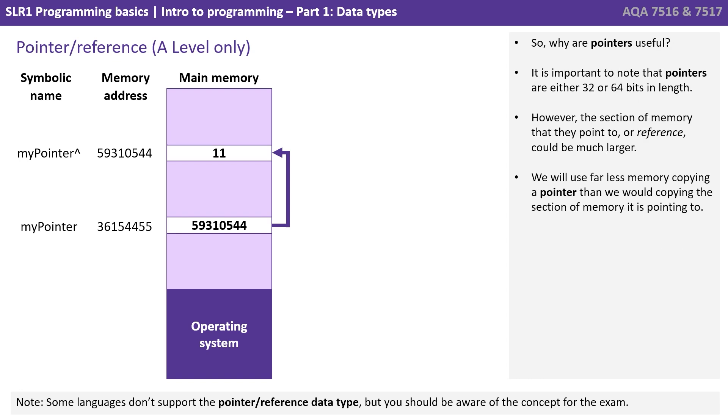So why are pointers useful? Well, it's important to note that pointers are either 32 or 64 bits in length. However, the section of memory that they point to or reference could be much larger. We will use far less memory copying a pointer than we would by potentially copying the section of memory it is pointing to.